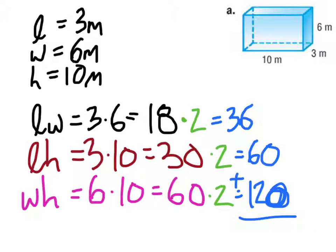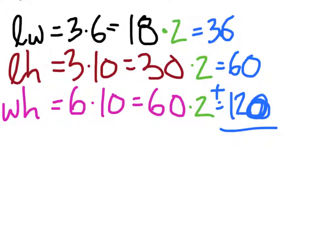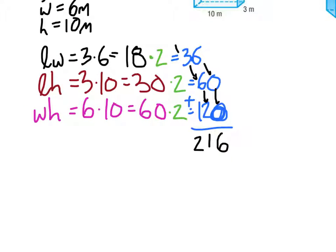Adding those together: 36 + 60 + 120. That gives us 216 meters squared.